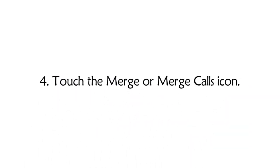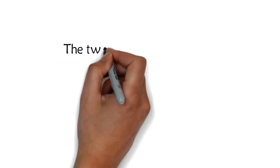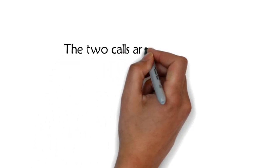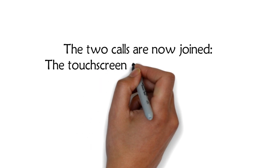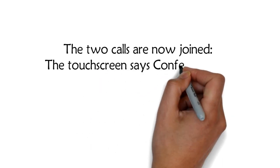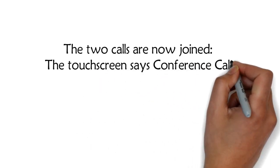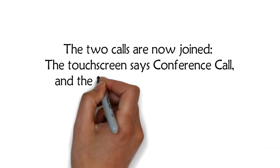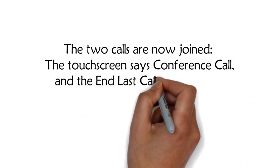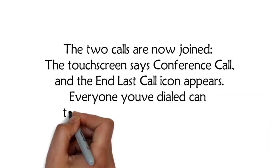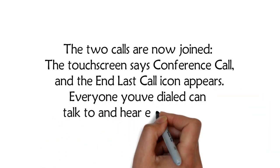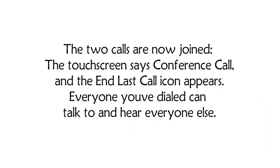Step 3: Touch the merge or merge calls icon. The two calls are now joined. The touchscreen says conference call and the end last call icon appears. Everyone you've dialed can talk to and hear everyone else.